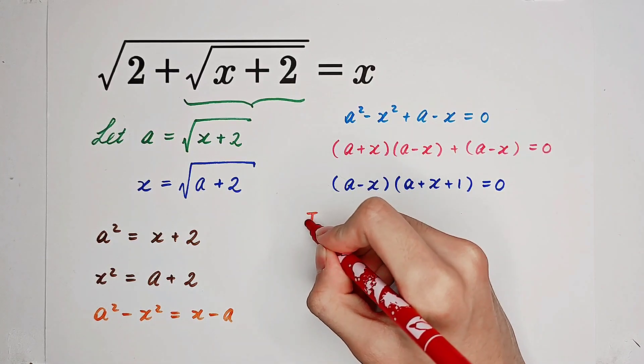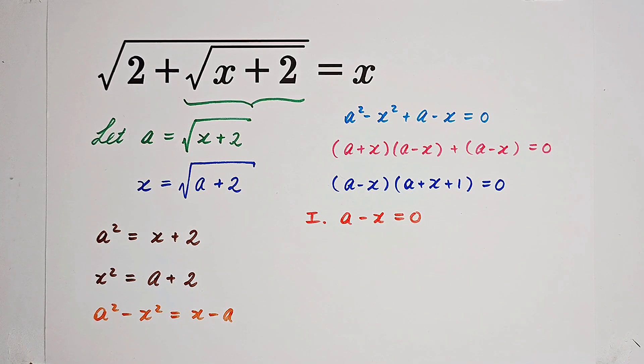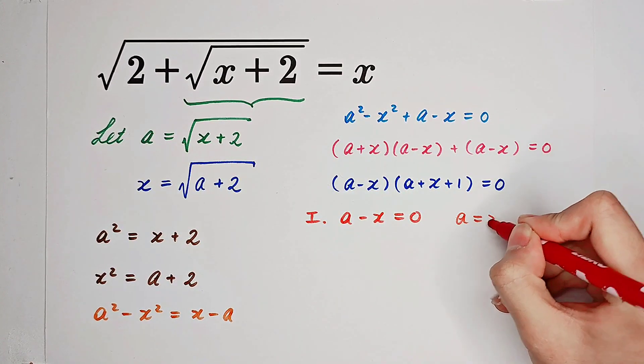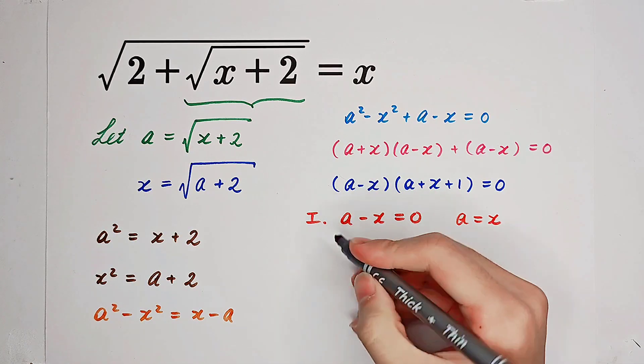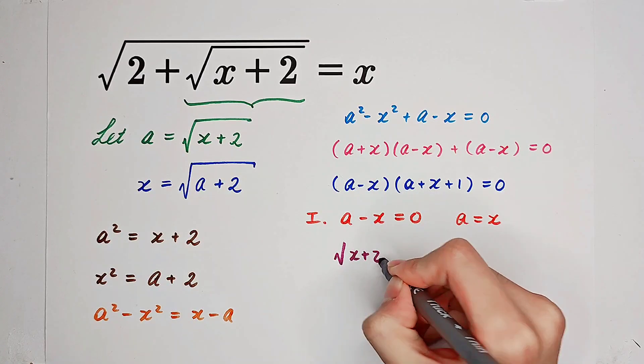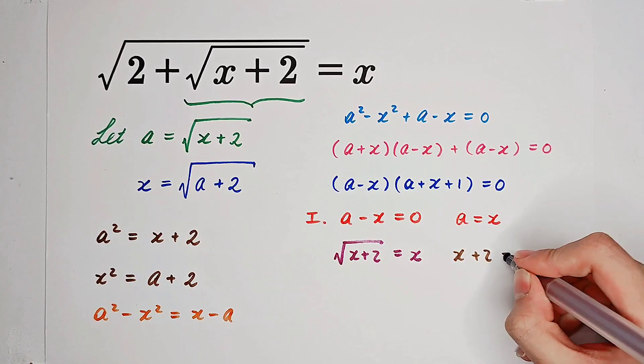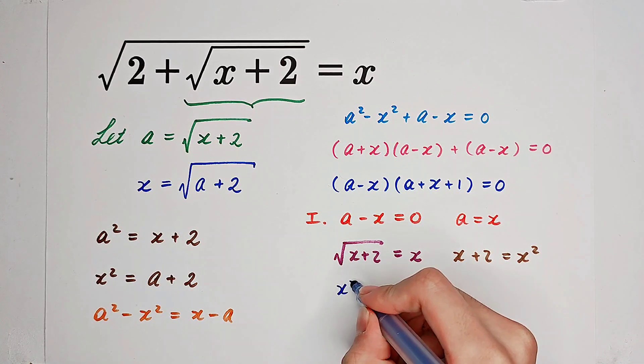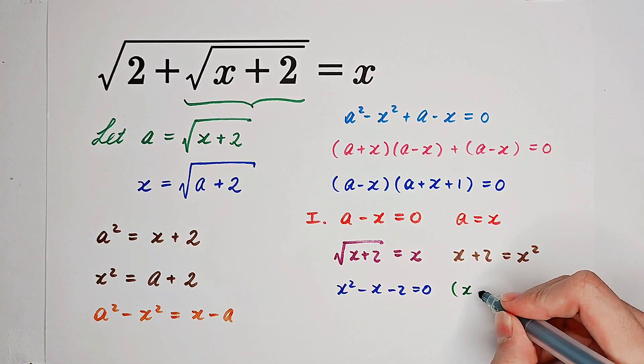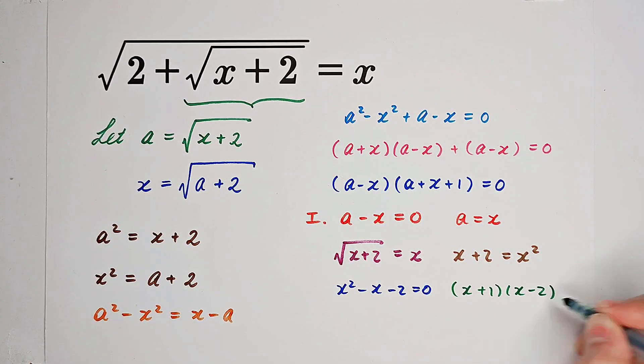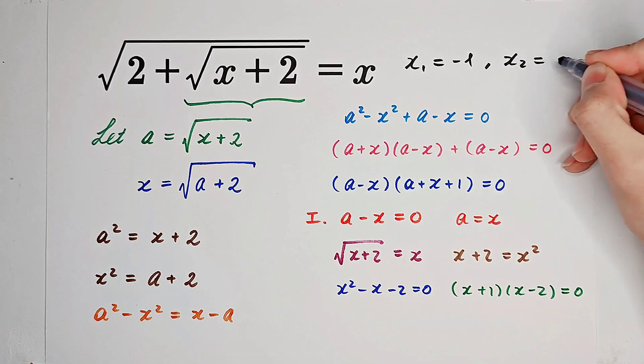Now we have two cases. If a minus x equals 0, therefore a equals x. And what is a? Nothing but square root of x plus 2. So square root of x plus 2 equals x. x plus 2 equals x squared. x squared minus x minus 2 equals 0. And it can also be factorized: it is x plus 1 times x minus 2 equals 0. x1 is negative 1 and x2 is 2.